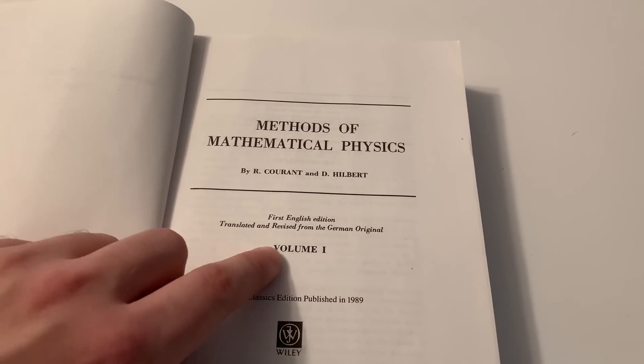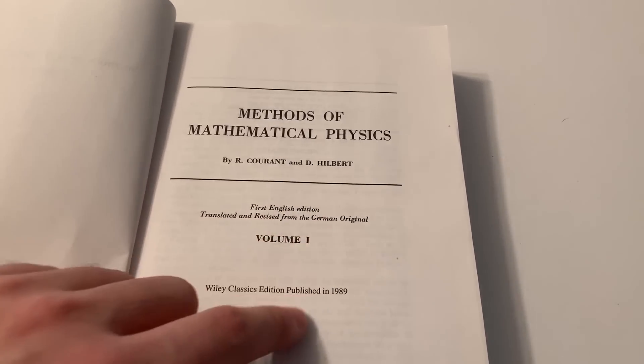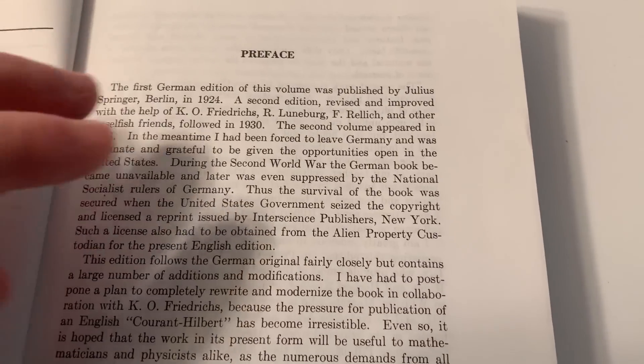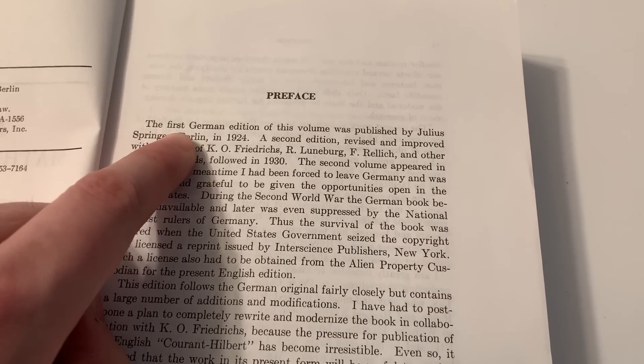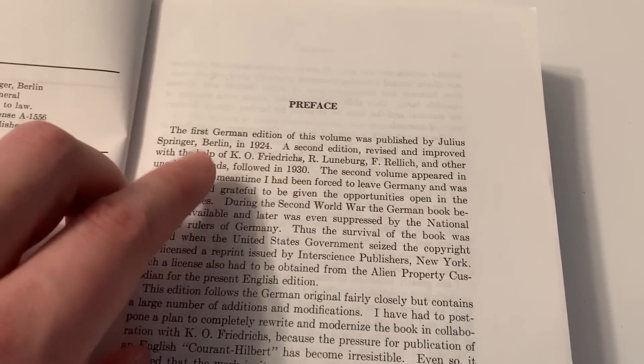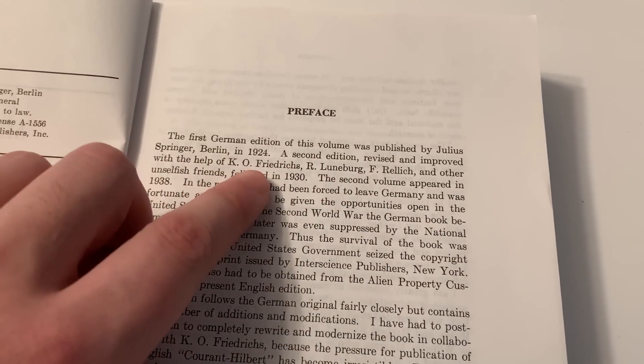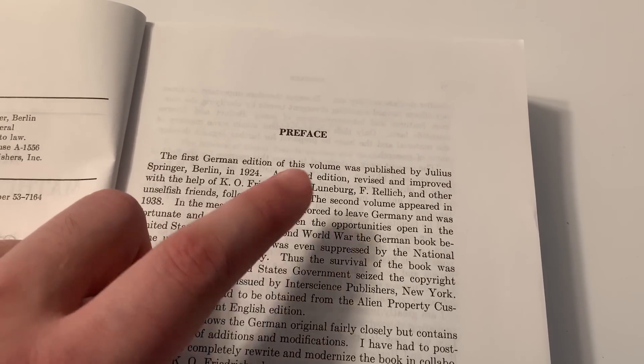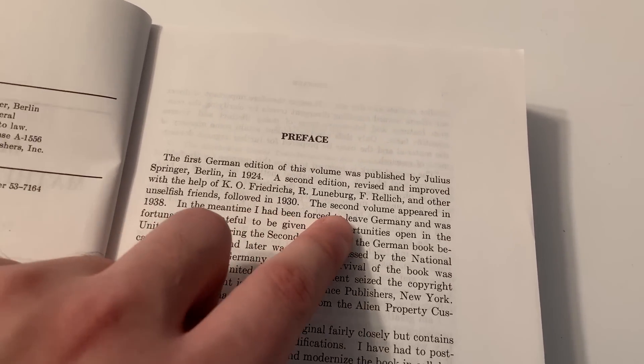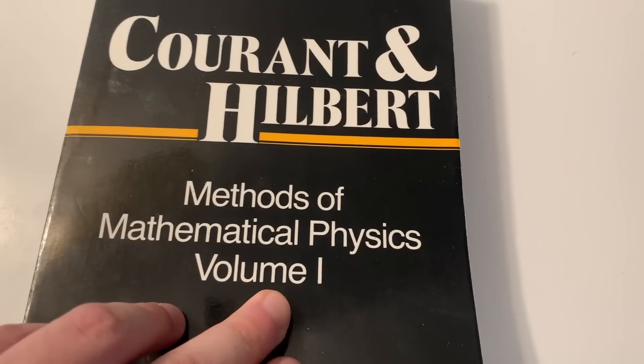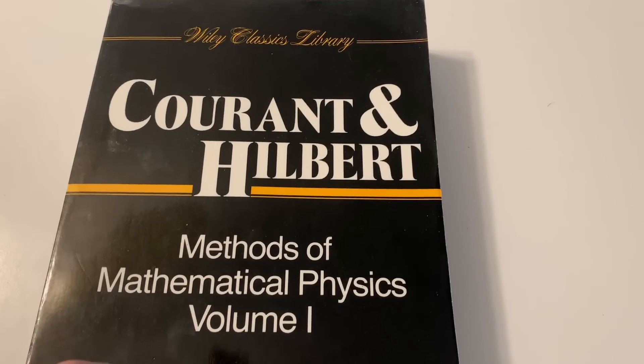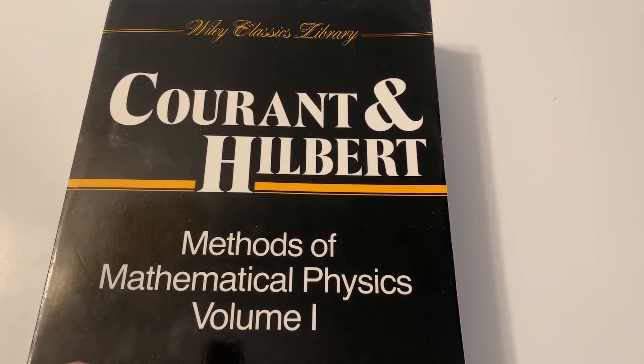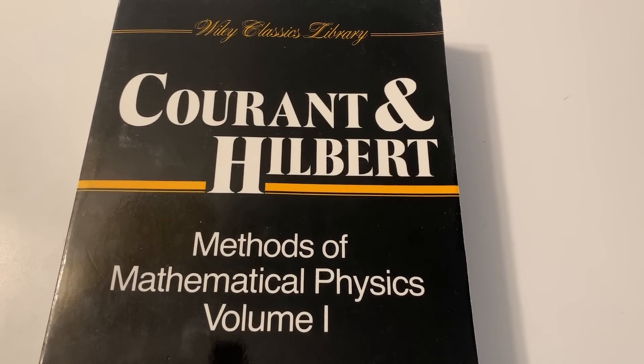First English edition, translated and revised from the German original. The first German edition of this volume was published by Springer in 1924, and the second edition in 1930. The second volume appeared in 1938. So this is only the first volume. The second volume is pretty much a standalone book. It is possible to read the two volumes separately.